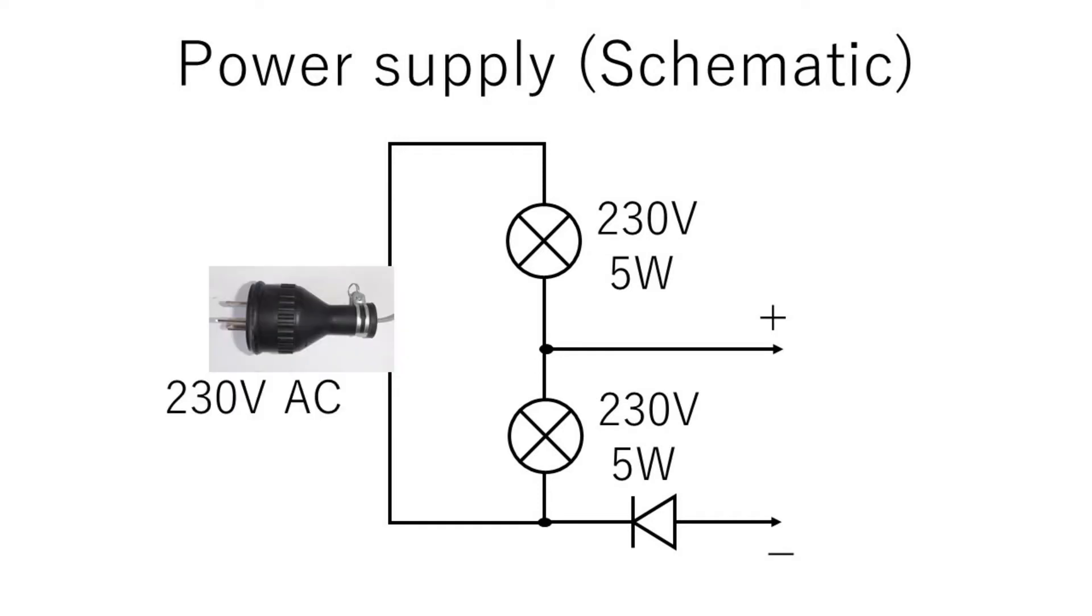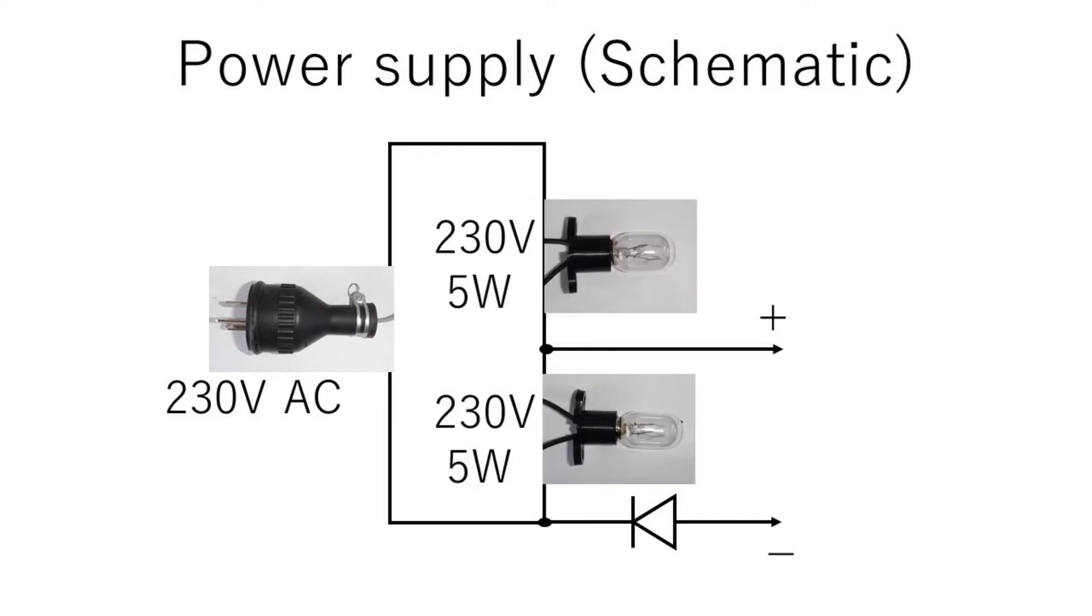General electrical output is the power source. Two electrical valves of the same type are connected in series. A diode is used to make direct current.